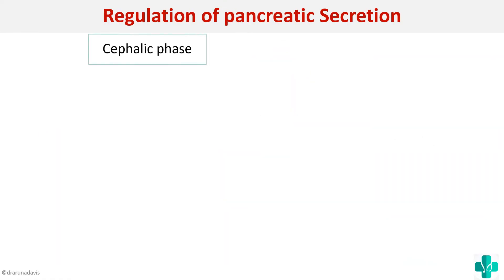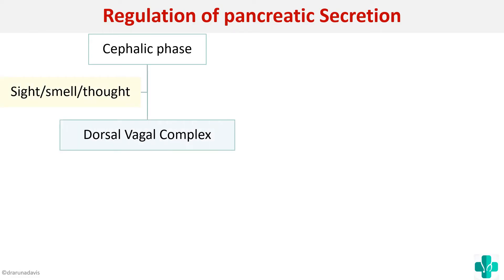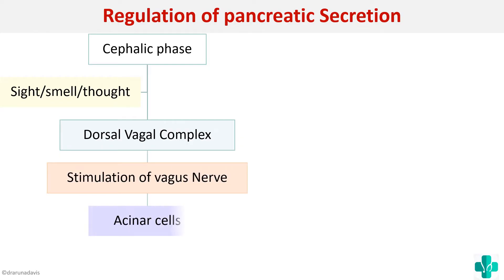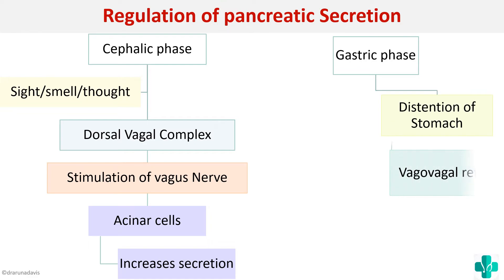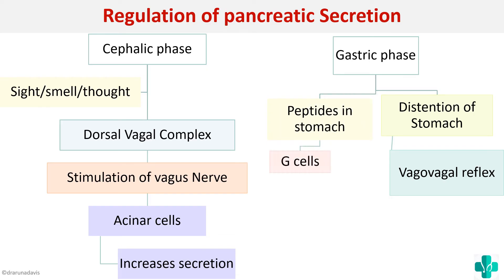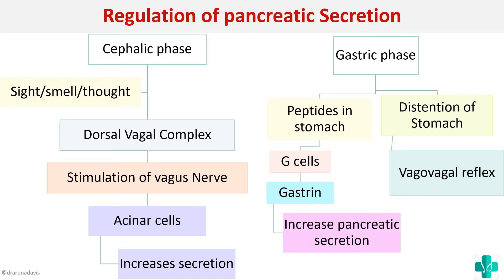In the cephalic phase, the sight, smell, or thought of food causes stimulation of the dorsal vagal complex, which stimulates the vagus nerve, and that acts on the acinar cells to produce increased secretion. The gastric phase occurs when food reaches the stomach — distension of the stomach causes a vagal-vagal reflex producing increased pancreatic secretion. Additionally, peptides in the stomach may activate G cells to produce gastrin, which can cause a slight increase in pancreatic secretion.